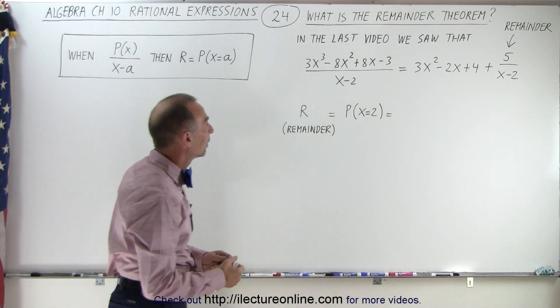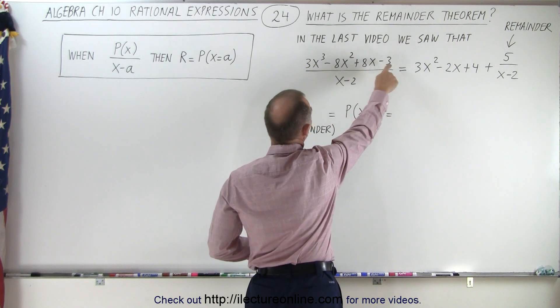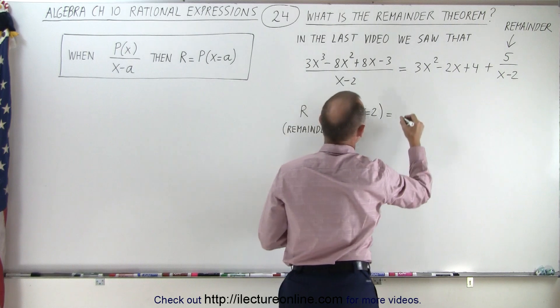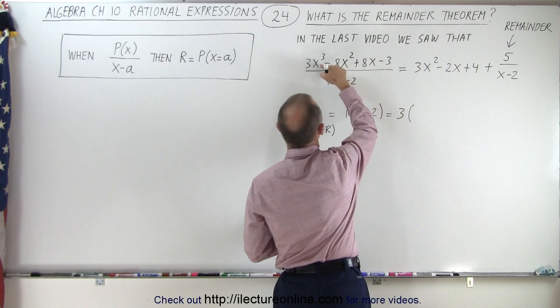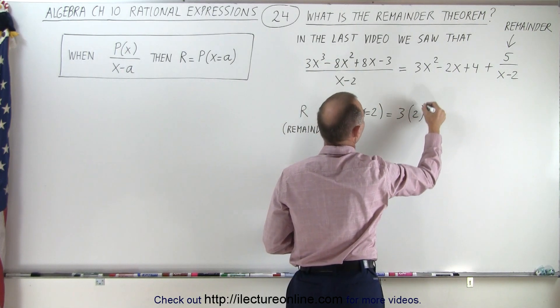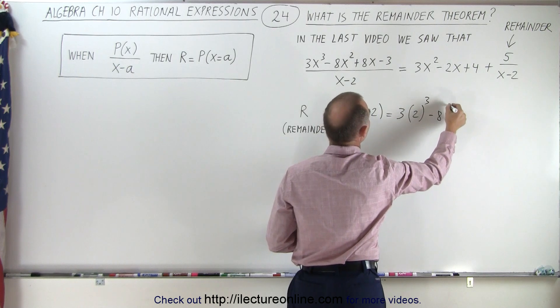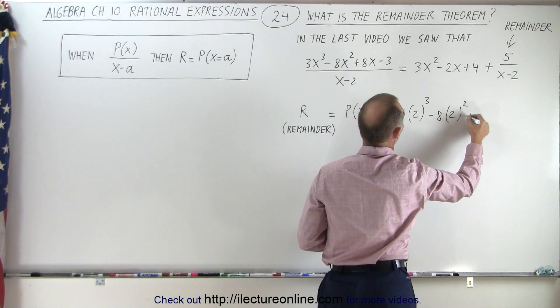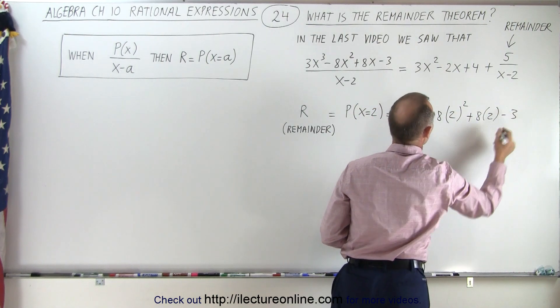So let's do that. We're going to take our polynomial in the numerator and plug in 2 for every x. So this is 3 times 2 to the third power minus 8 times 2 to the second power plus 8 times 2 minus 3.